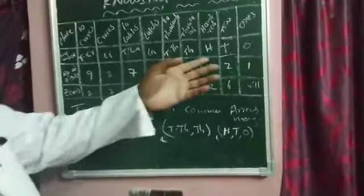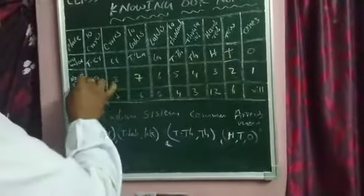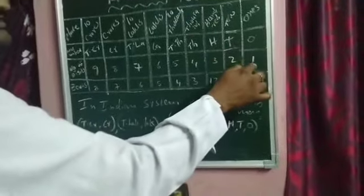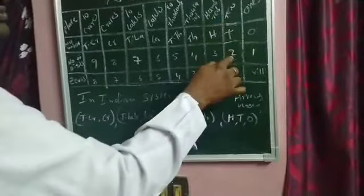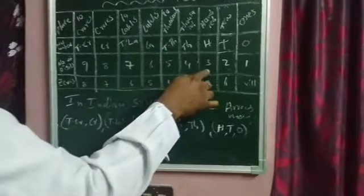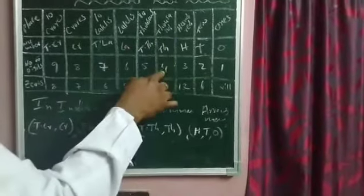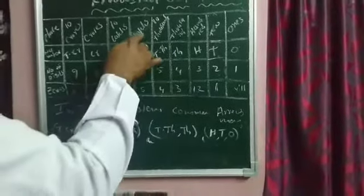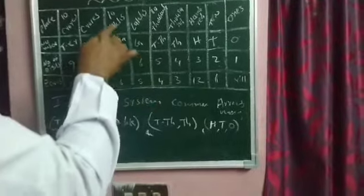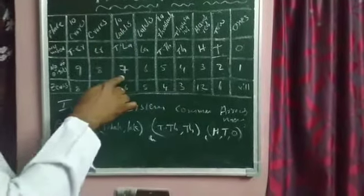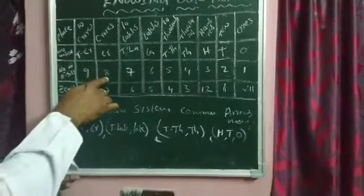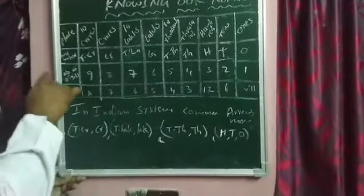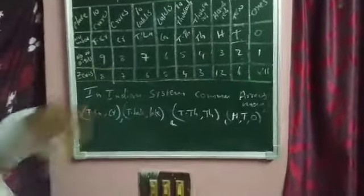Now observe how many digits are at each place. Ones place has one digit, tens place has two digits, hundreds place has three digits, thousands place has four digits, ten thousands place has five digits, lakhs place has six digits, ten lakhs place has seven digits, crores place has eight digits, and ten crores place has nine digits.